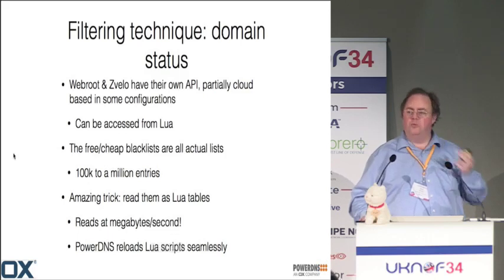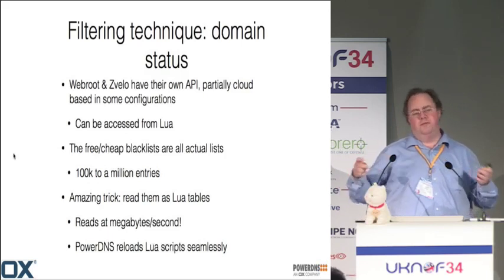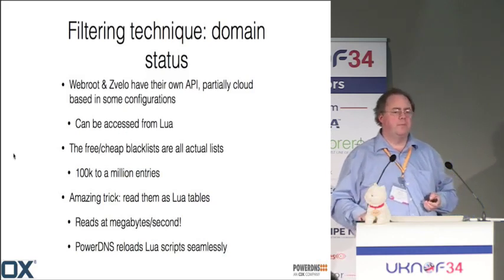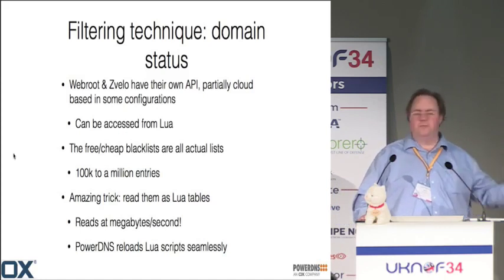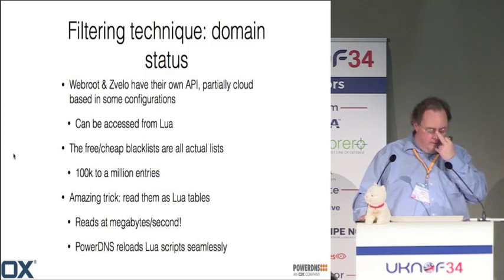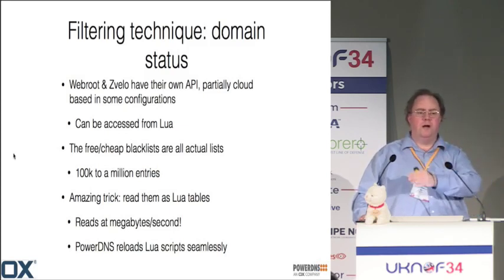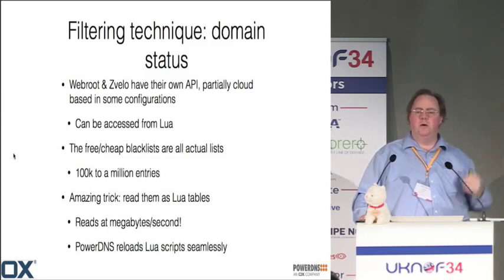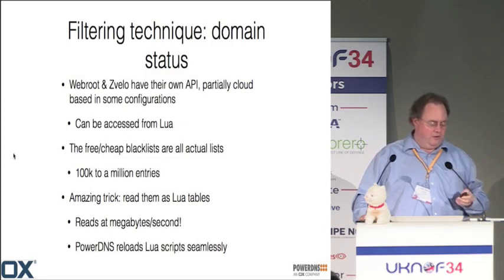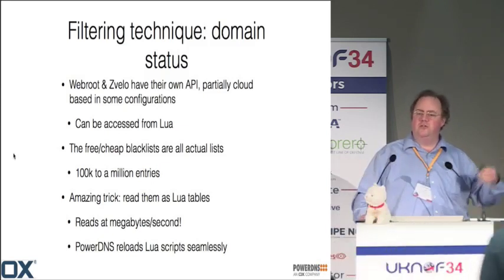How do you figure out what categories a domain is in? Commercial suppliers have their own APIs — some live partially in the cloud — and provide wrappers to access categorization from any programming language including Lua. The free and cheap blacklists are actual files with 500k domain names. Lua is fast enough that you can grab such a flat list and load it into a big Lua statement — it scales: you can read these blocklists at megabytes per second, loading two million statuses in less than one second.